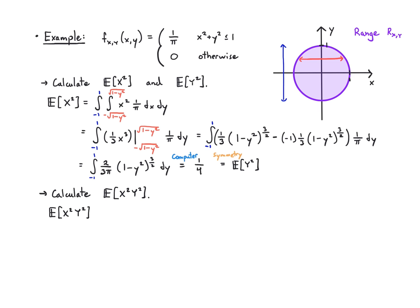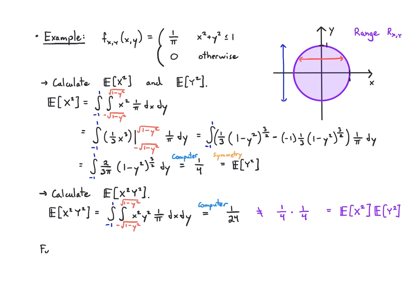We see that E[x²y²] = 1/24, which is not equal to E[x²]·E[y²] = (1/4)·(1/4) = 1/16. So because x and y are dependent, there are functions where I cannot split up the expectation of a product. E[xy] happened to split up nicely, but E[x²y²] did not. I always have to be careful, and we'll see more about why these things happen in a later video.